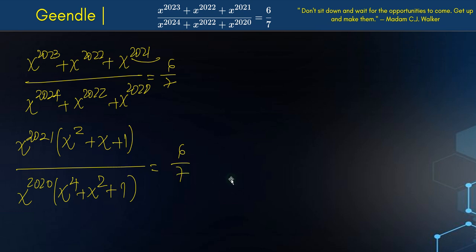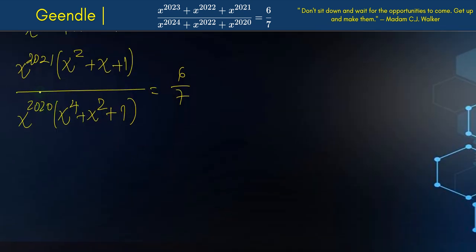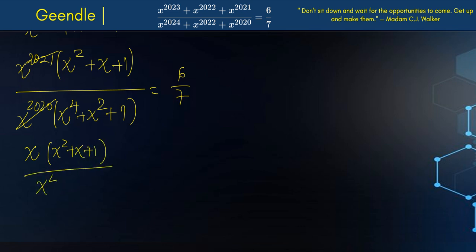Now we can simplify — x to the 2021 divided by x to the 2020 leaves just x. So we get x times (x squared plus x plus 1) all over (x to the 4 plus x squared plus 1), and this equals 6 over 7. Now let's look at the denominator: x to the 4 plus x squared plus 1.